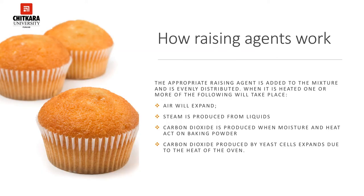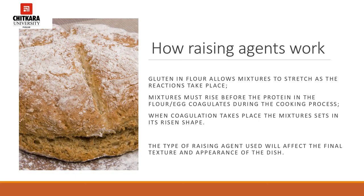Let's now summarize how raising agents work. The appropriate raising agent is added to the mixture and evenly distributed. When it is heated, one or more of the following will take place: 1. Air will expand. 2. Steam is produced from liquids and enlarges the air cells; the steam escapes and is replaced by air. 3. Carbon dioxide is produced when moisture and heat act on baking powder; the carbon dioxide enlarges the air cells and aerates the mixture, and the gases expand when heated. 4. Carbon dioxide produced by yeast cells expands due to the heat of the oven.